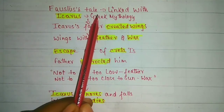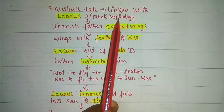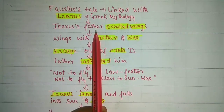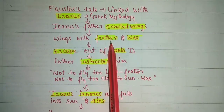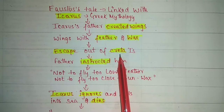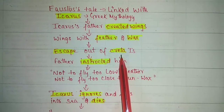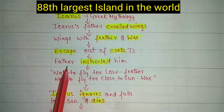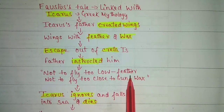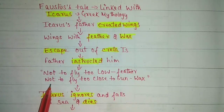Faustus' tale is linked with Greek mythology. In Greek mythology we find Icarus and his father, who created wings made of feather and wax in order to escape out of Crete. This is an island. Father had instructed him not to fly too low because the feathers might get soaked with water from the sea, become heavy, and they won't be able to fly.